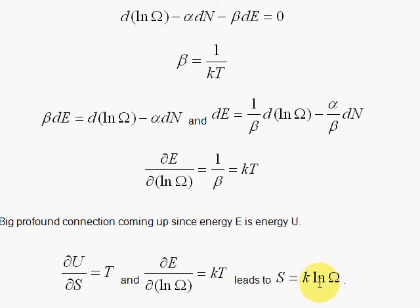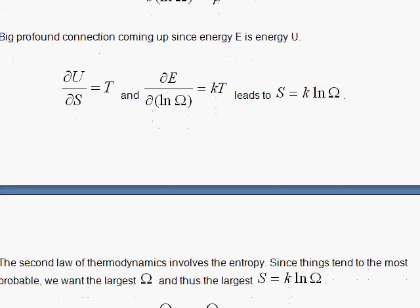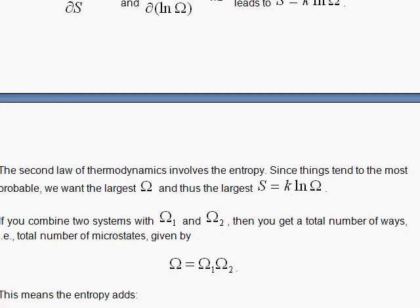That's a profound equation. That relates entropy to the microscopic world, where we have the number of ways here that the state can be in. Now, look at this other conclusion. When you study chemistry, they tell you if you combine two systems, you add the entropy. Now, you can see why, if you have one system with omega-1 and another system with omega-2, the number of ways, if you put them both together, will be multiplied.